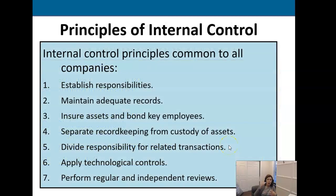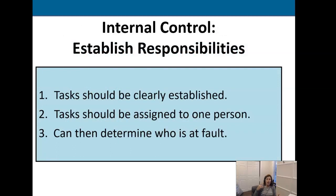Within those components we have principles that I will go through in greater detail. The primary thing we need to do is establish responsibilities. But prior to all of this, we need to have an environment that says we need to do things right, follow procedures, and that integrity and ethical standards matter. That needs to be communicated from the top of the organization down — it's referred to as 'tone at the top.' Upper-level management needs to not only talk the talk but walk the walk as well.